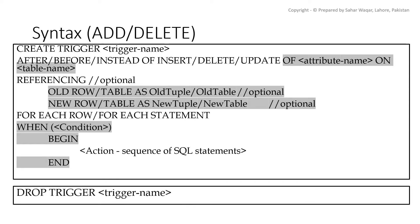After REFERENCING, we can name our old and new rows and old and new tables — for example, OLD ROW AS old_tuple or OLD TABLE AS old_table. Note that old table contains either deleted tuples or old versions of updated tuples, and new table contains either inserted tuples or new versions of updated tuples. Then we specify the trigger level: FOR EACH ROW for row-level, or FOR EACH STATEMENT for statement-level. Statement level is the default if FOR EACH ROW is omitted.